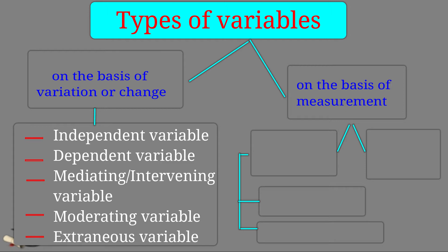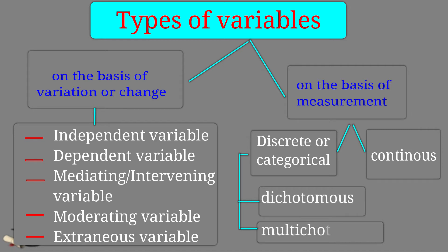While on the basis of measurement, there are two types of variables. Discrete variables, discrete or categorical variables, and number two, continuous variables. Discrete variables have further two types, dichotomous variables and multichotomous variables.